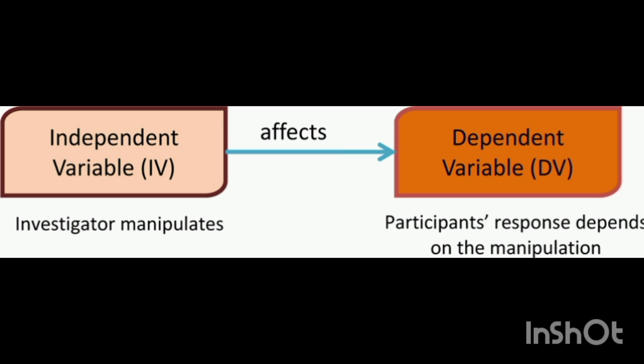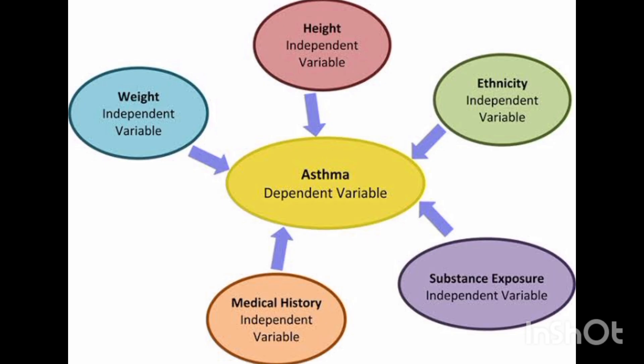The independent variable affects the dependent variable, and the investigator manipulates the independent variable to change the outcome. The last example: the dependent variable is asthma, and the independent variables are factors related to the patient who has asthma — such as weight, height, intensity, substance exposure, and medical history.